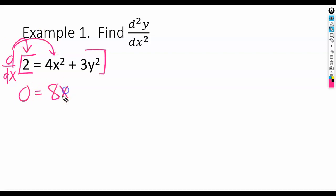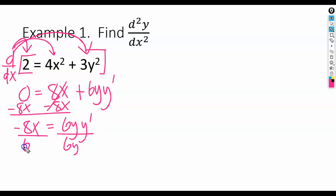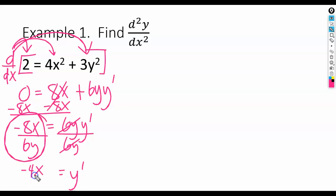That will be 8x, and this will be 6y y'. We want to get that y' by itself, so the first thing I'll do is move the 8x over. Then I'll divide both sides by 6y. I've got negative 8x over 6y, which reduces to negative 4x over 3y. Now, that's our first step — just finding the first derivative.